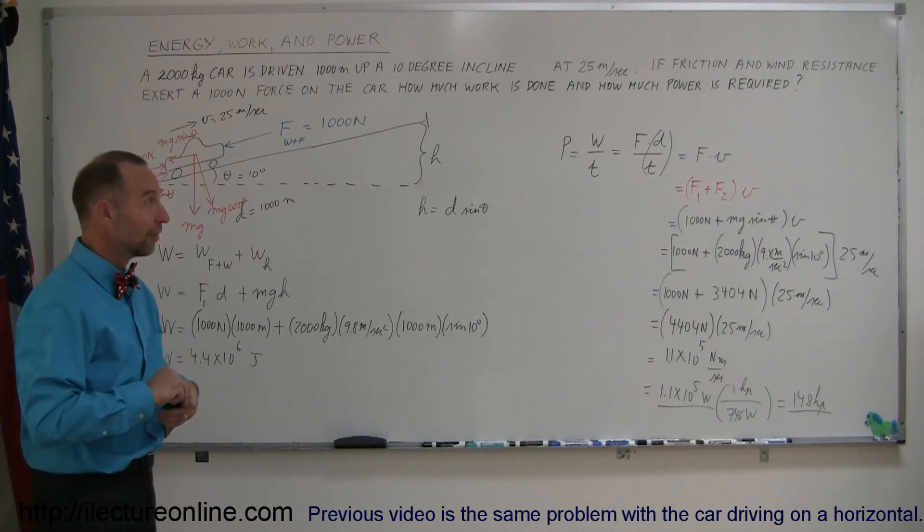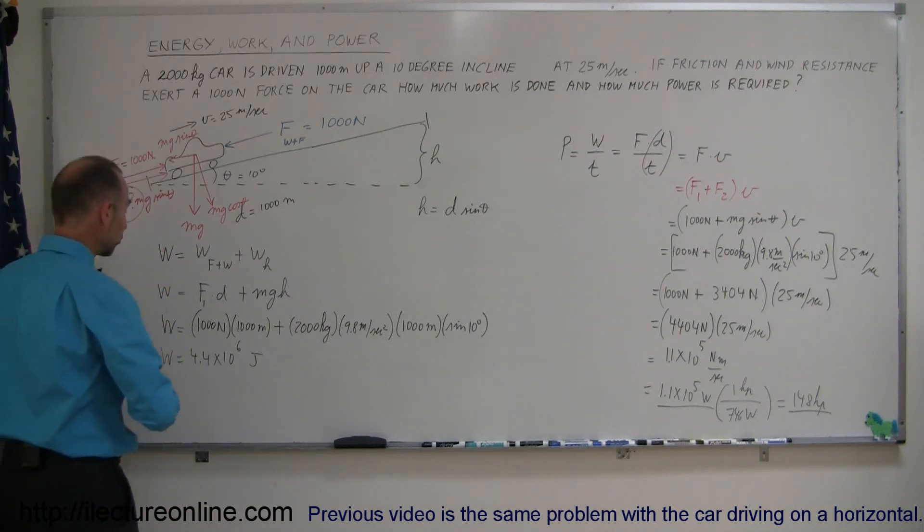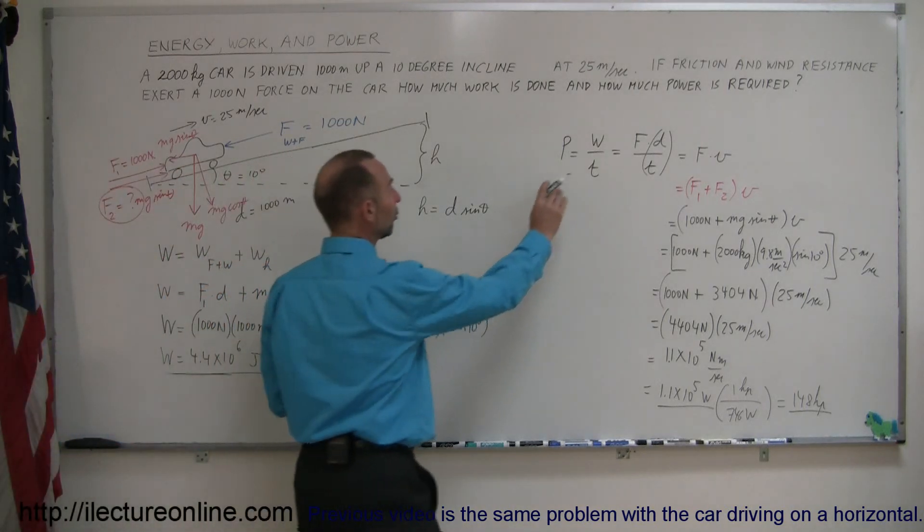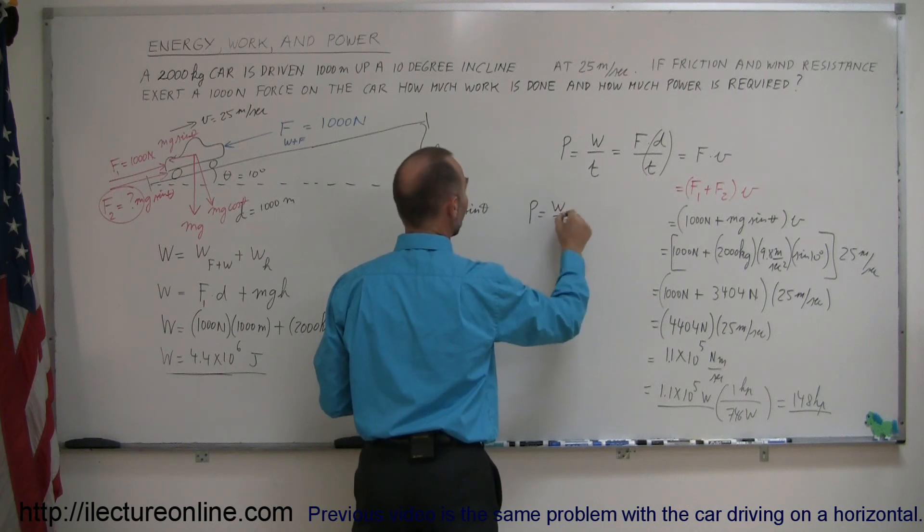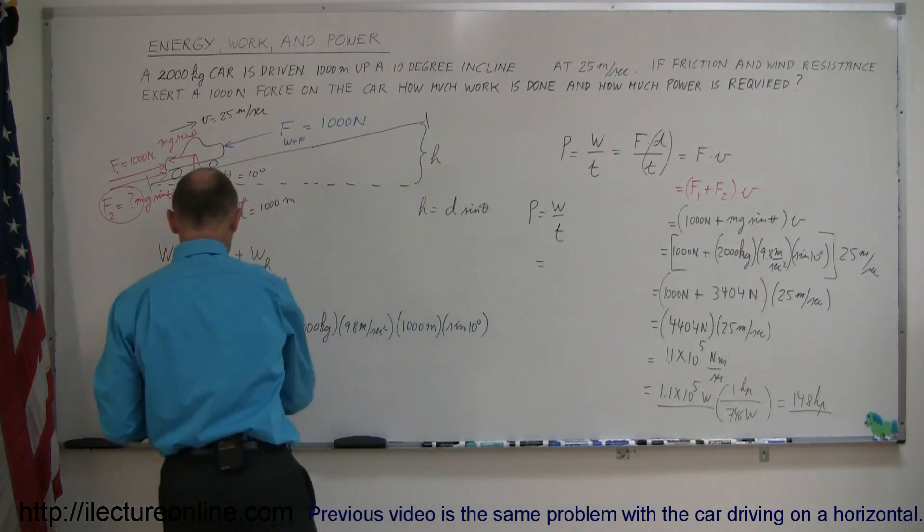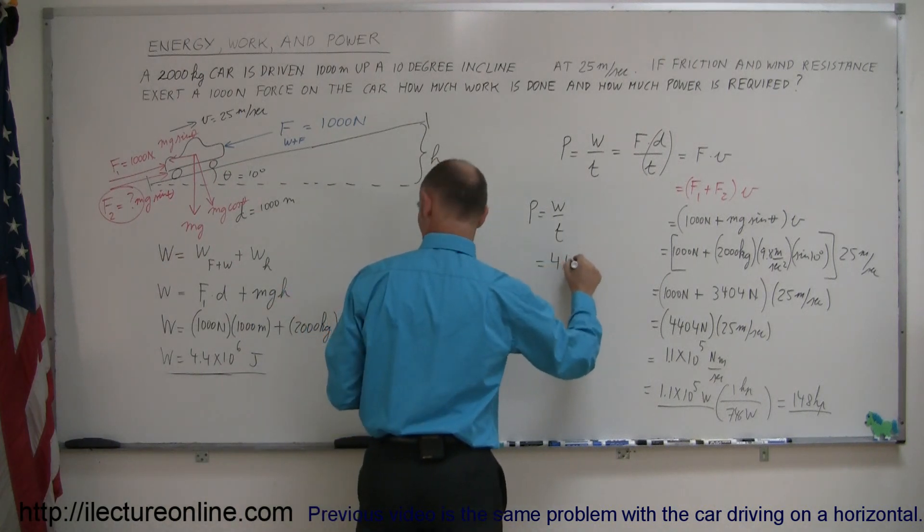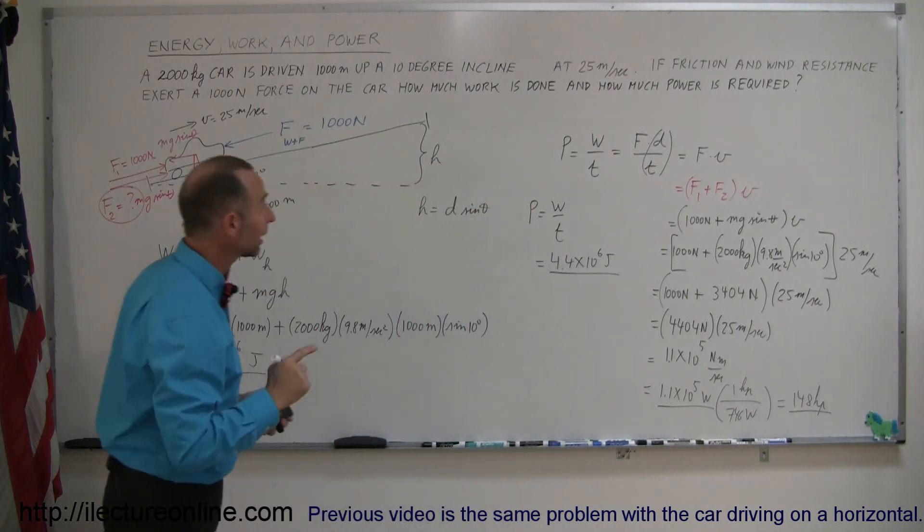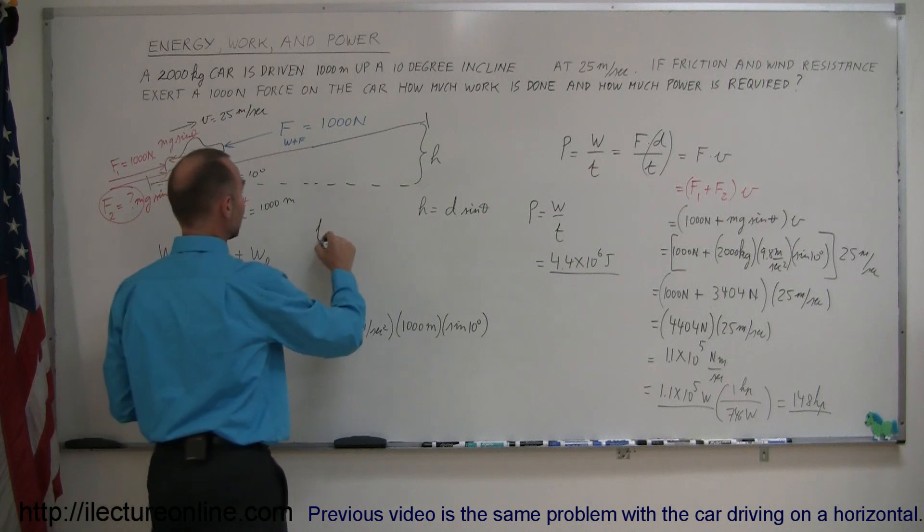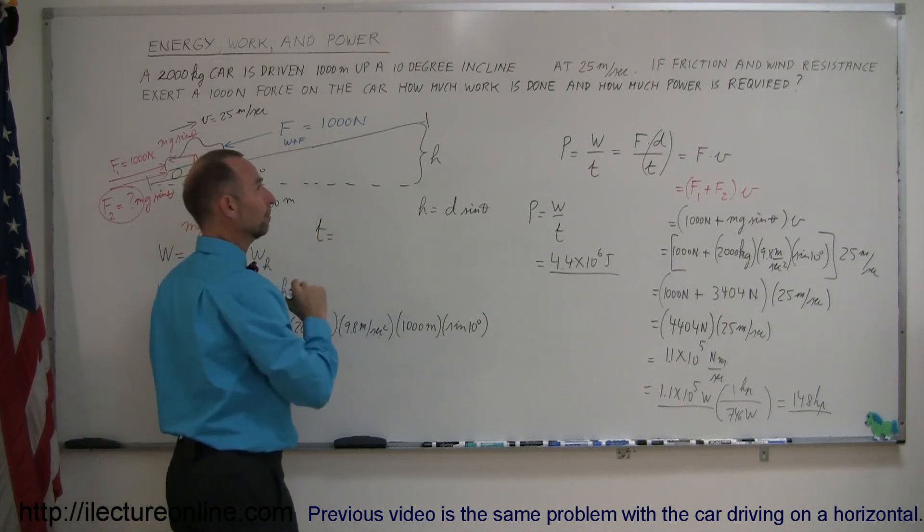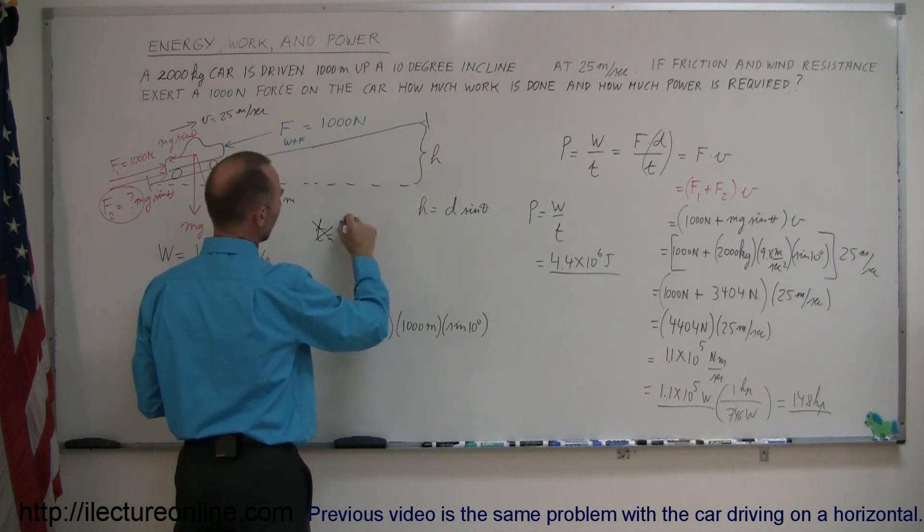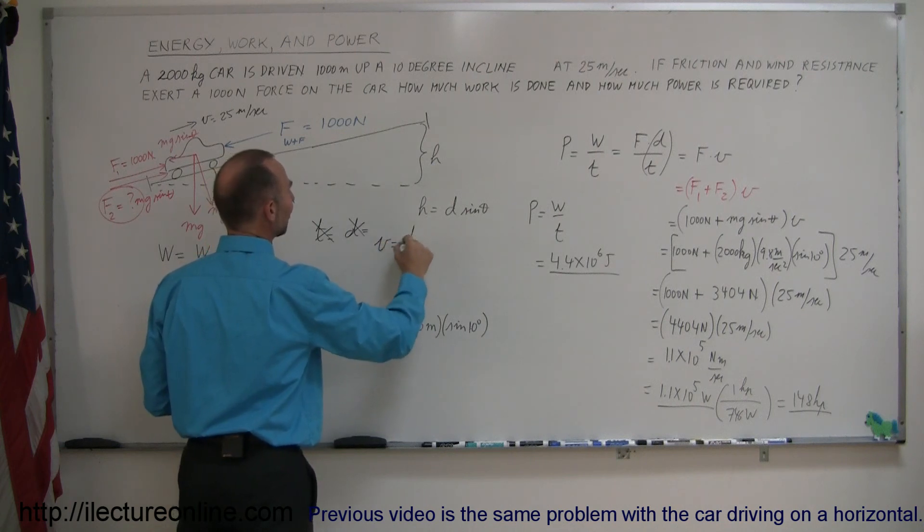Now, there's actually another way in which we could have done that. Notice, we already knew how much work was done. And since power can also be defined as work done divided by the time, we can simply have taken the amount of work that we did to get the car up there, which is 4.4 times 10 to the sixth joules, and divided it by the amount of time that it took to get up the incline. And since velocity is equal to distance over time, or time is equal to distance divided by velocity.